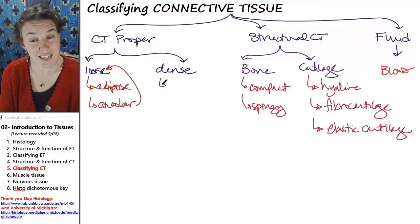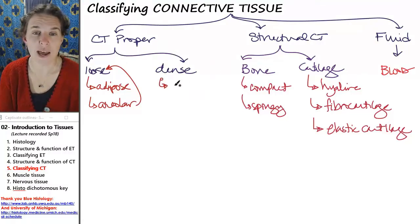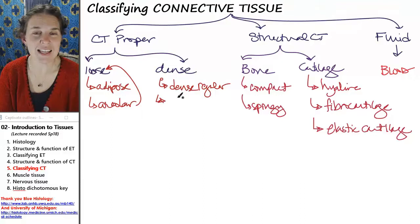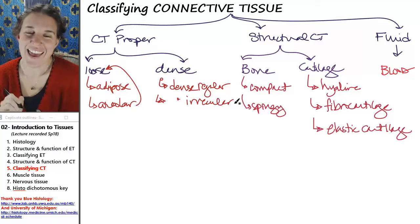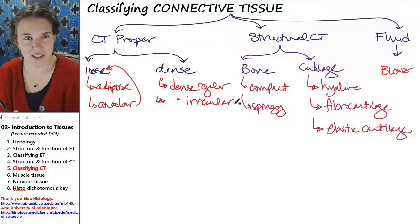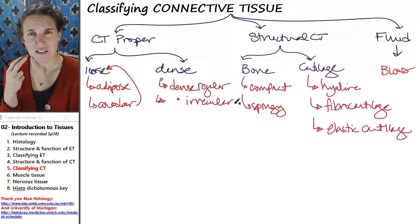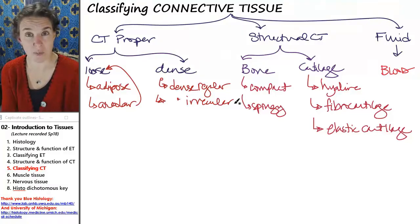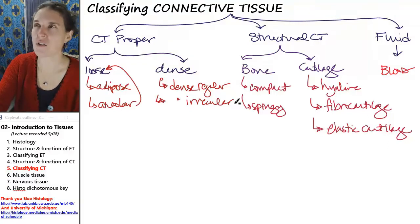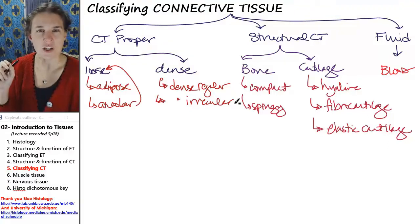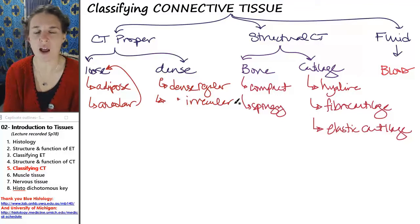Dense connective tissue also comes in two flavors. We have dense regular and dense irregular connective tissue. And dense regular and dense irregular connective tissue both have really big, significant collagen fibers. But in dense regular, all the collagen fibers are going in the same direction. And in dense irregular, they're not.